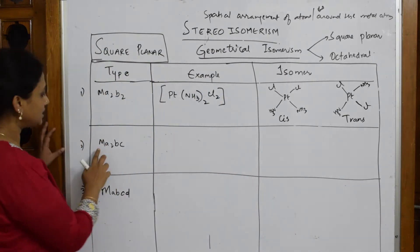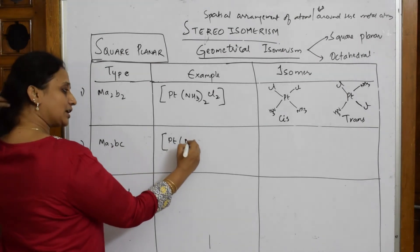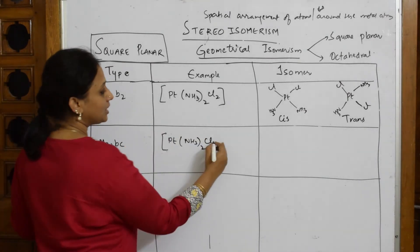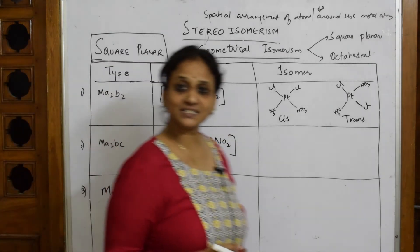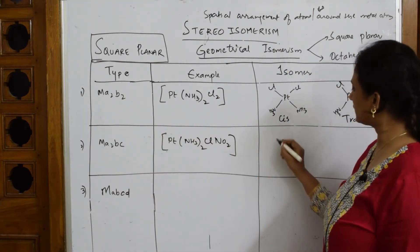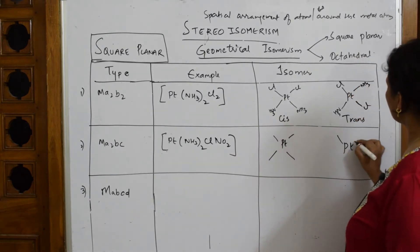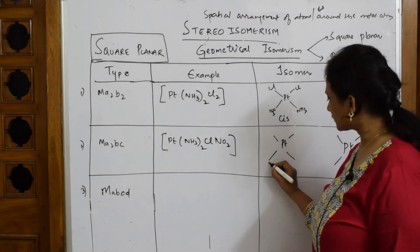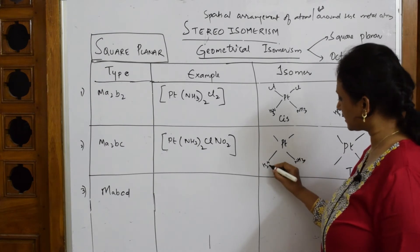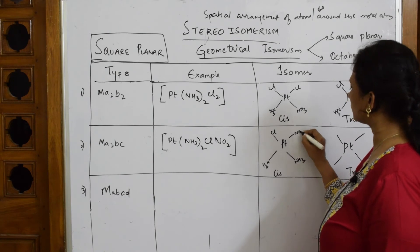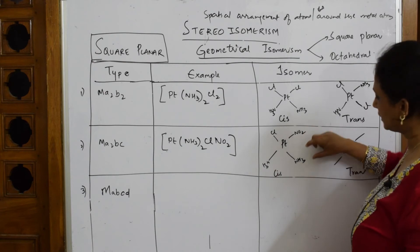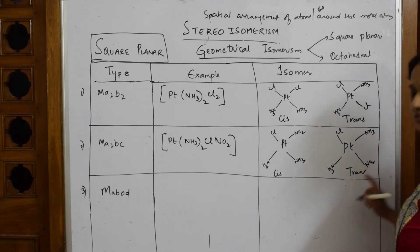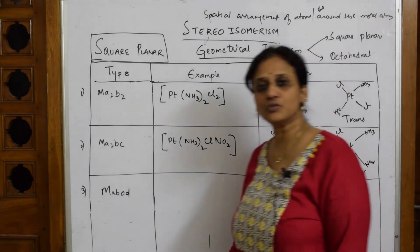Now let us draw for the MA₂BC type. Take Pt as the metal, NH₃ as A₂, Cl as B, and NO₂ as C — total four ligands. Draw Pt in the center with a square planar geometry. For cis, place both NH₃ on the same side, with Cl and NO₂ filling the remaining positions. For trans, hold one NH₃ and rotate so that the two NH₃ groups are on opposite sides, with Cl on one side and NO₂ on the other. This gives the cis and trans isomers.